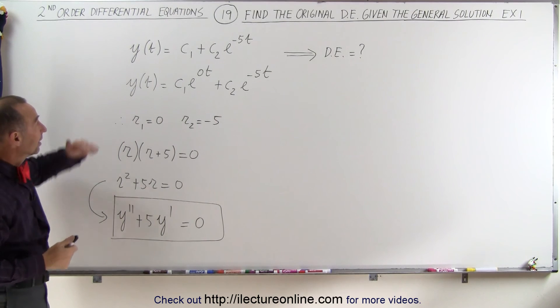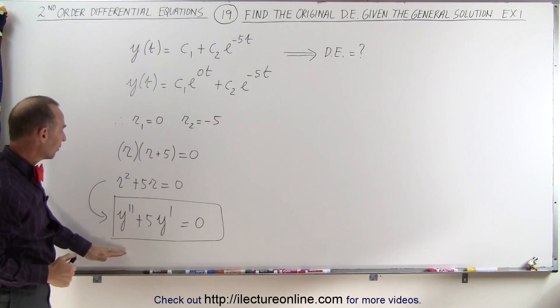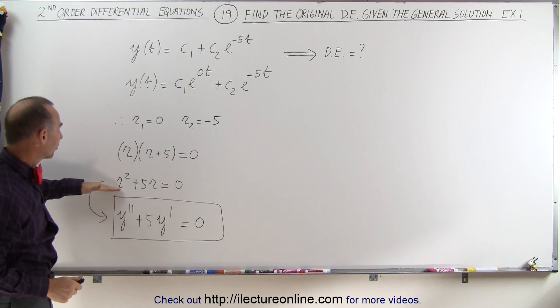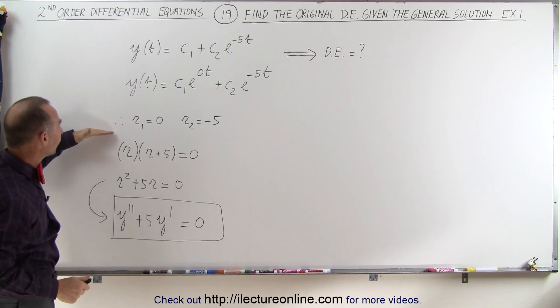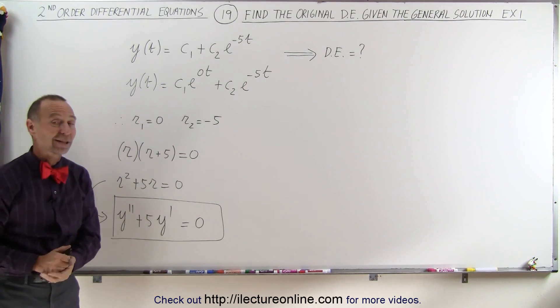So it's actually kind of neat that we can go both directions. We can start with the solution and find the differential equation. We can take the differential equation, turn it into a characteristic equation, solve for the roots, and turn it into a general solution. And that's how that works.